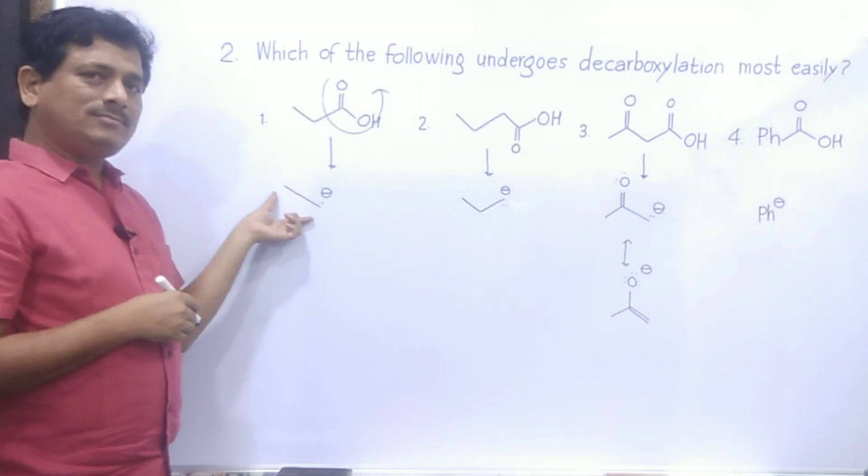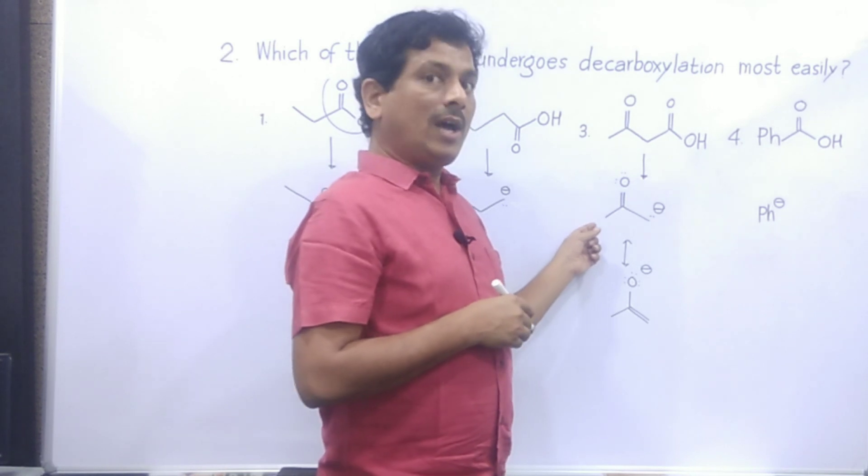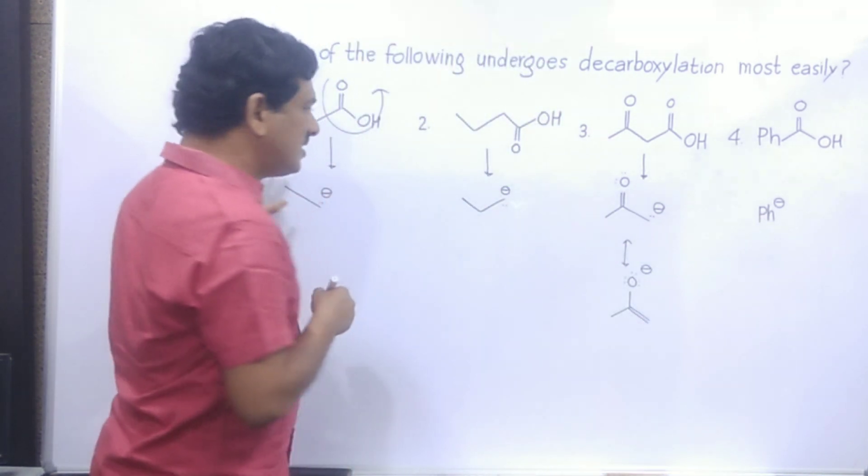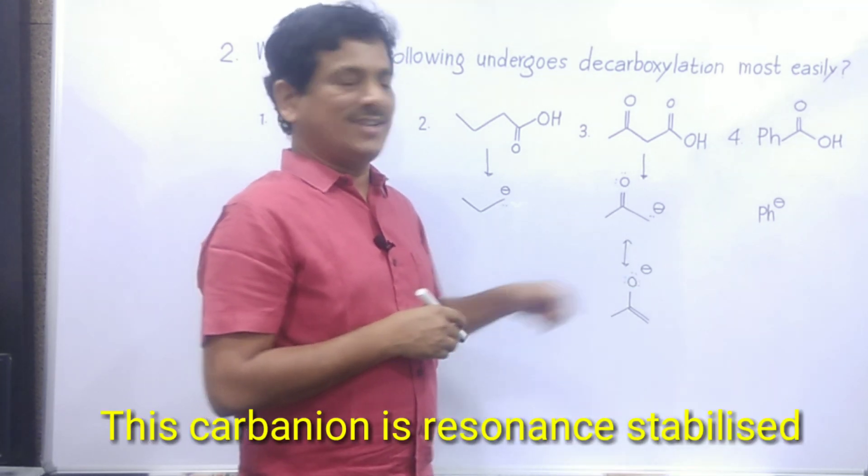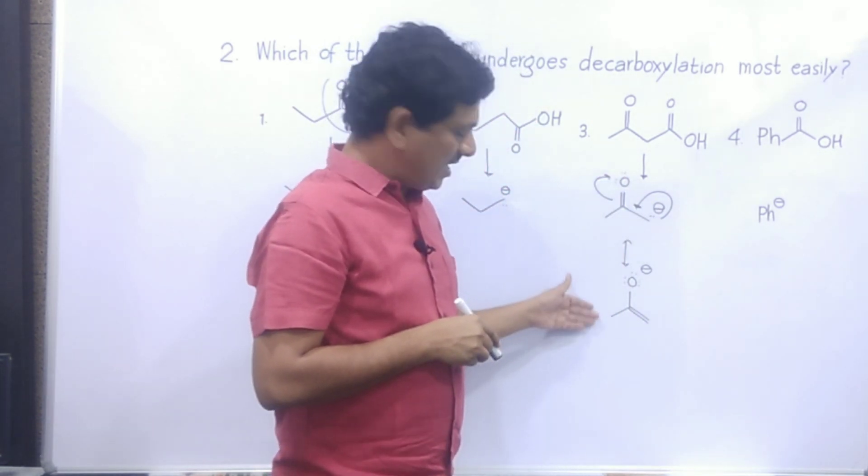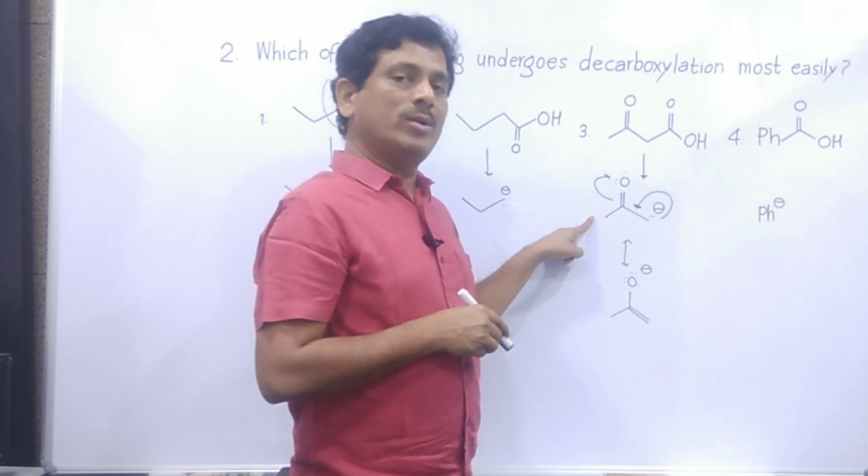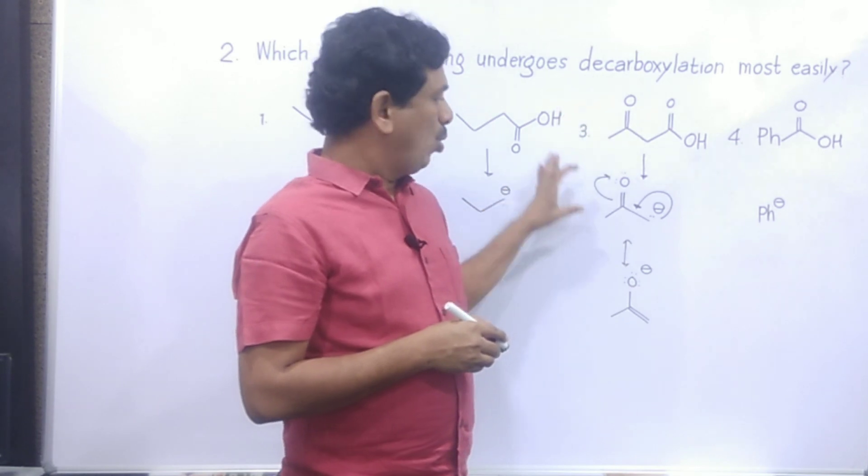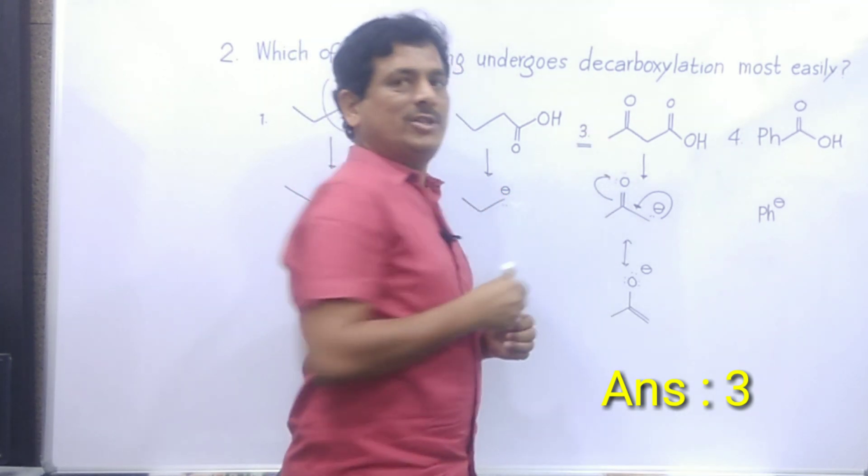Now let us see. It is ethyl carbanion, it is propyl carbanion, this is a carbanion, and there is phenyl carbanion. Now if we consider the stabilities of these, this carbanion is having conjugation in it, and therefore this carbanion exhibits the phenomenon of resonance. This compound changes to this, and this again interconverts into each other. So this carbanion is most stable amongst these all. Therefore, the compound giving more stable intermediate will be more reactive. So the answer to this question will be option 3.